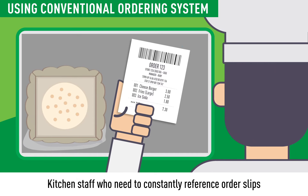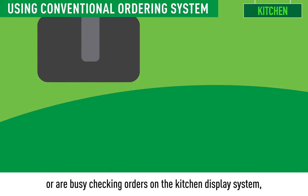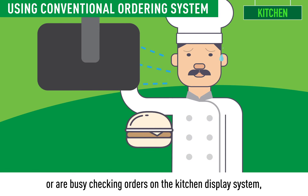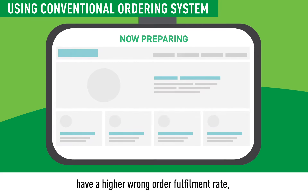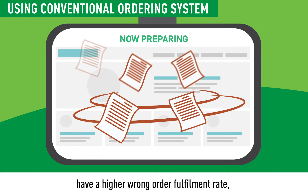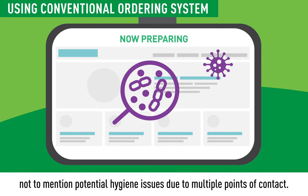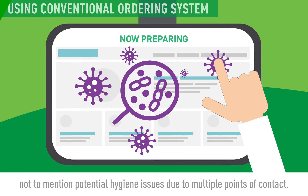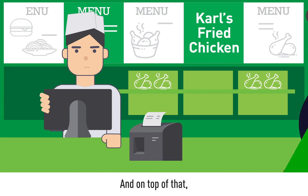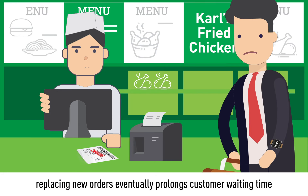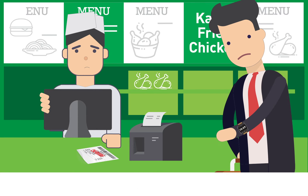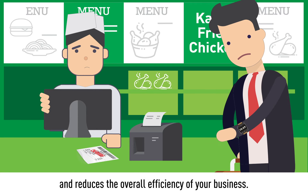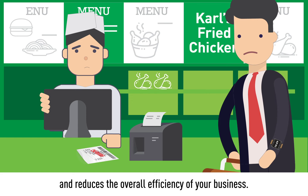Kitchen staff who need to constantly reference order slips or are busy checking orders on the kitchen display system have a higher wrong order fulfilment rate, not to mention potential hygiene issues due to multiple points of contact. On top of that, replacing new orders eventually prolongs customer waiting time and reduces the overall efficiency of your business.